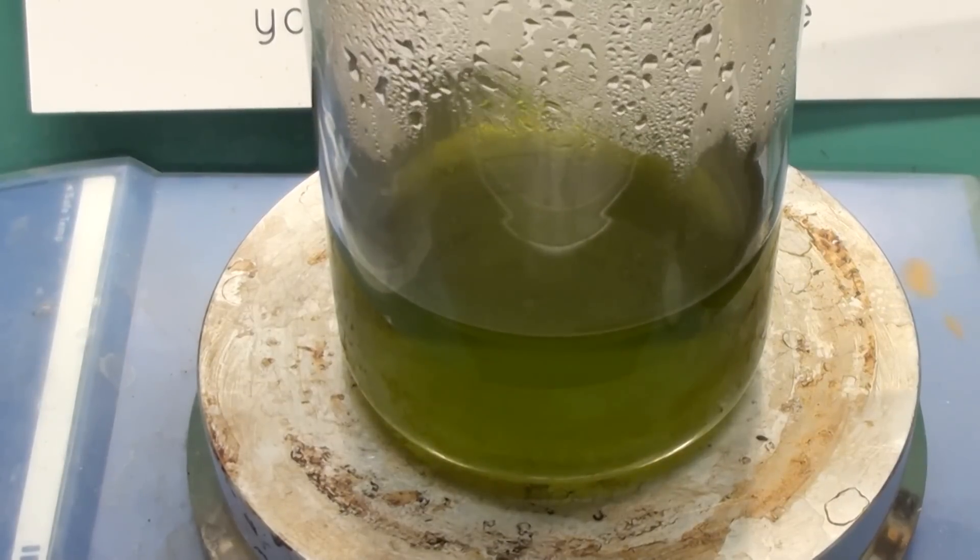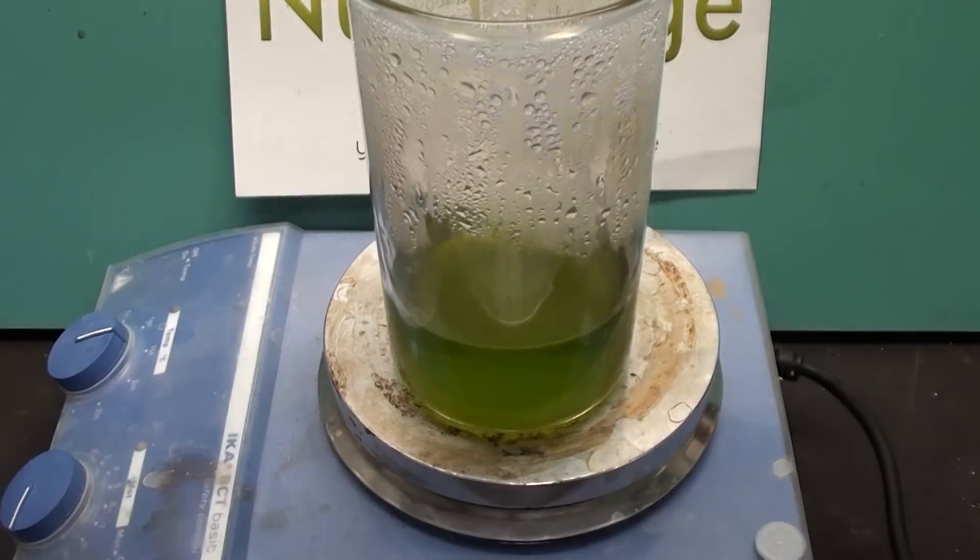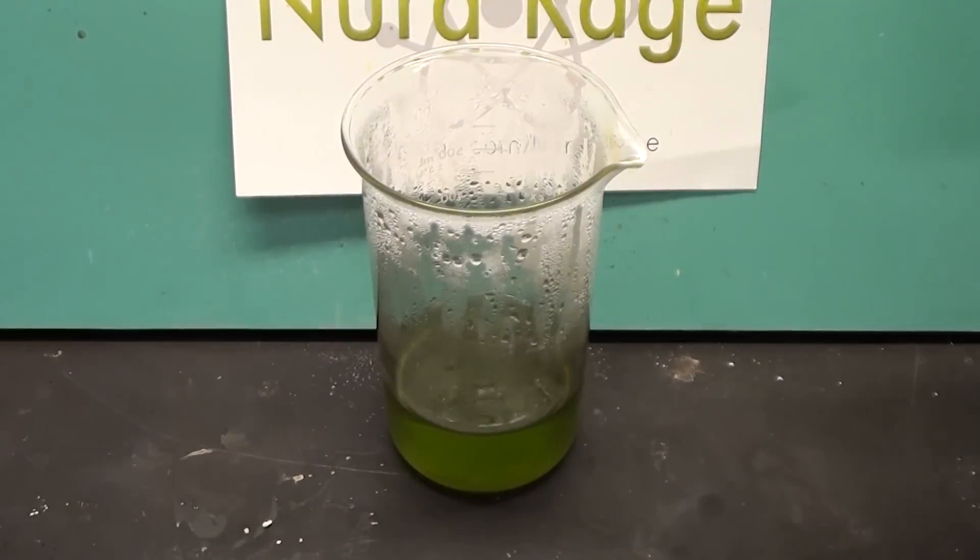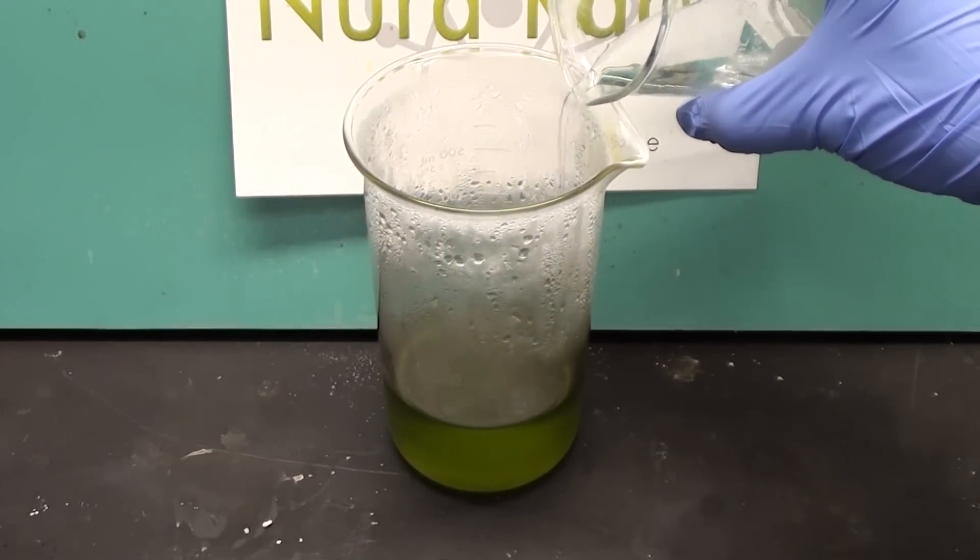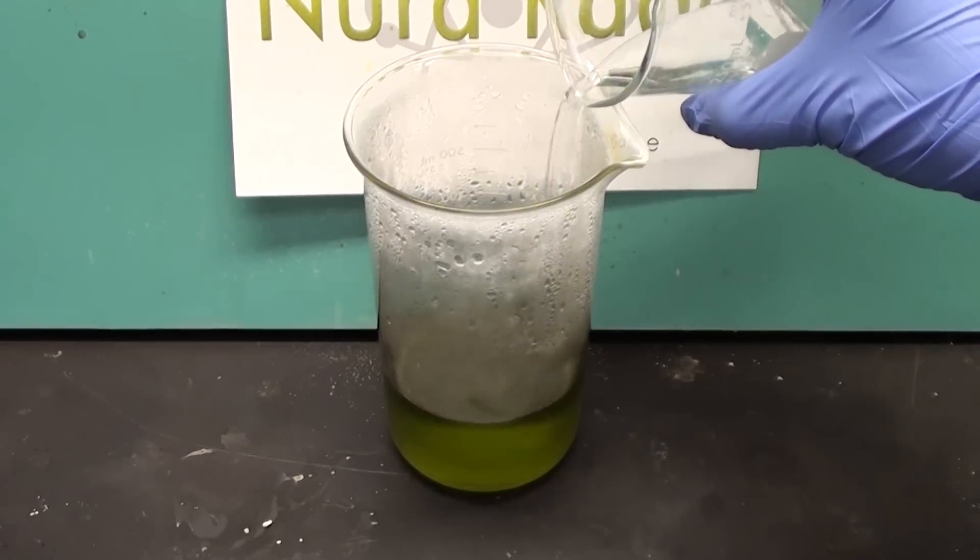Once the iron is completely dissolved, turn off the heating and let it cool. If any of the acid evaporated or boiled off, just top it up with more acid until the total volume is back to 200mL.